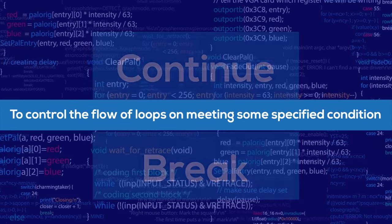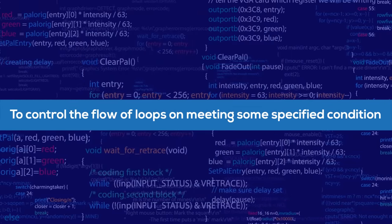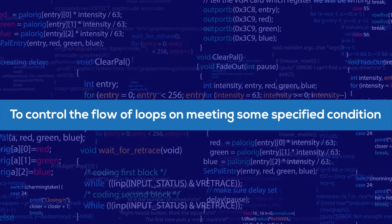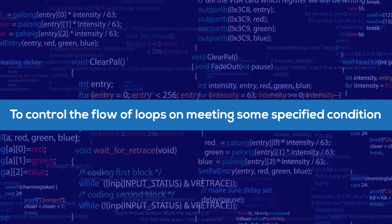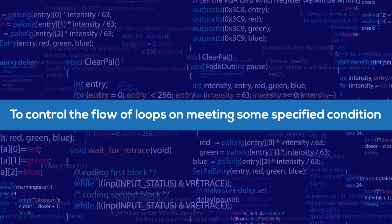These statements are used when we want to control the flow of our loops on meeting some specified conditions.